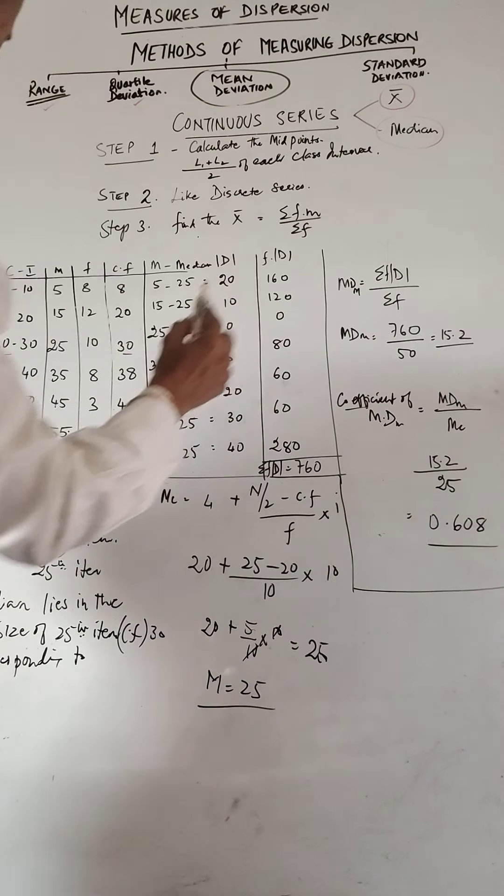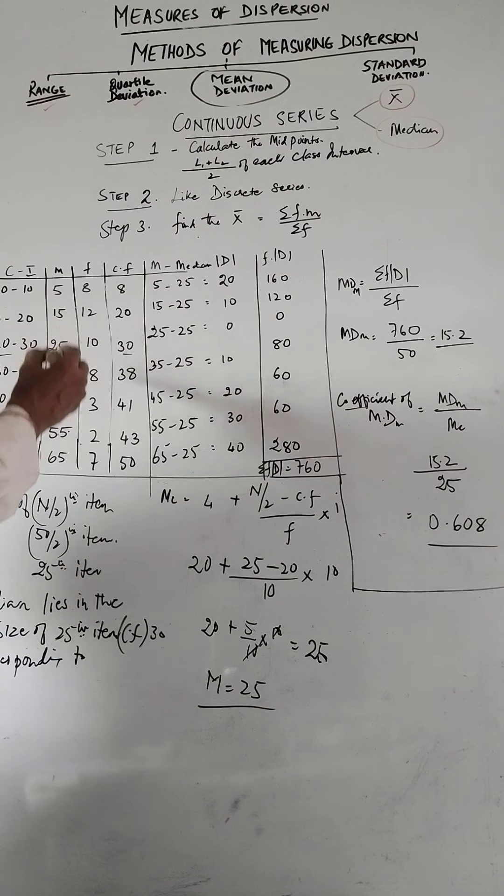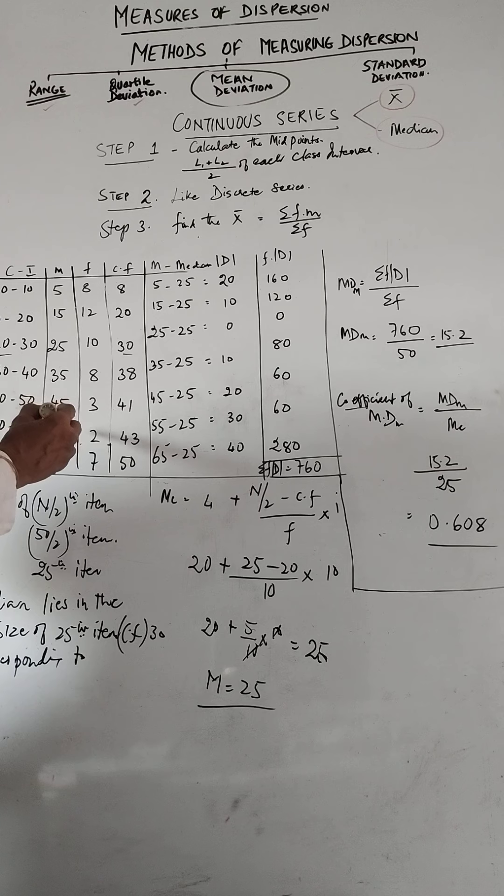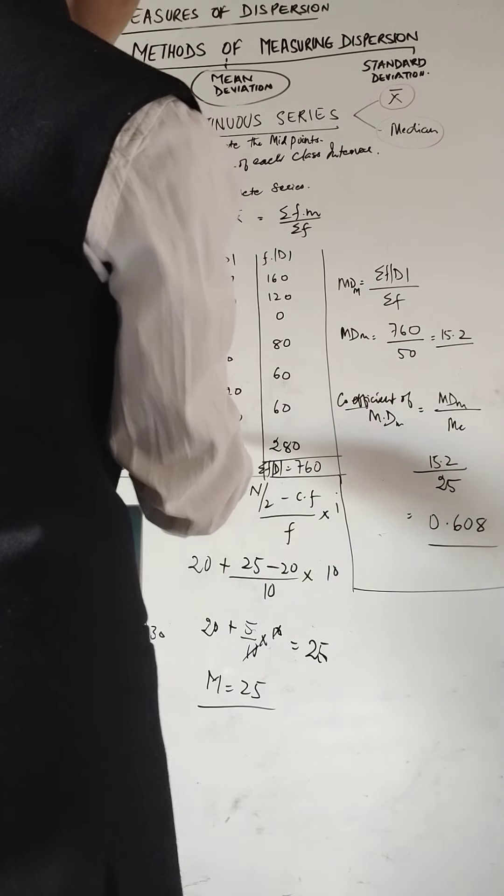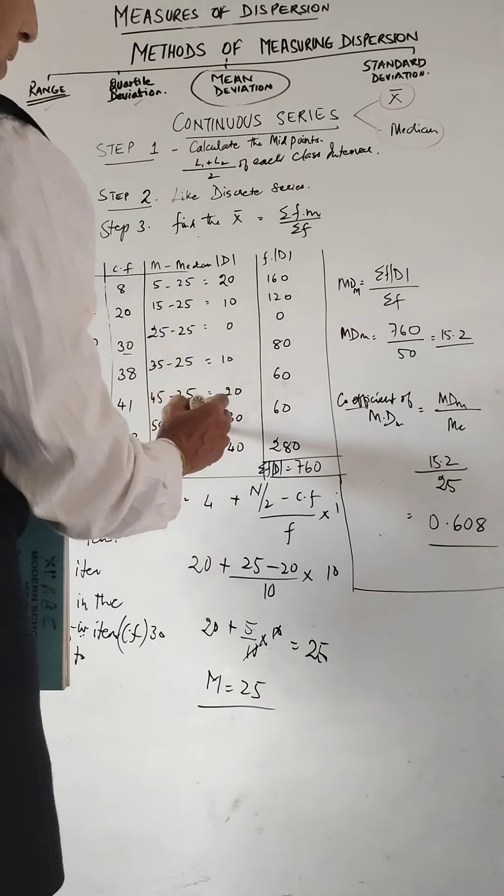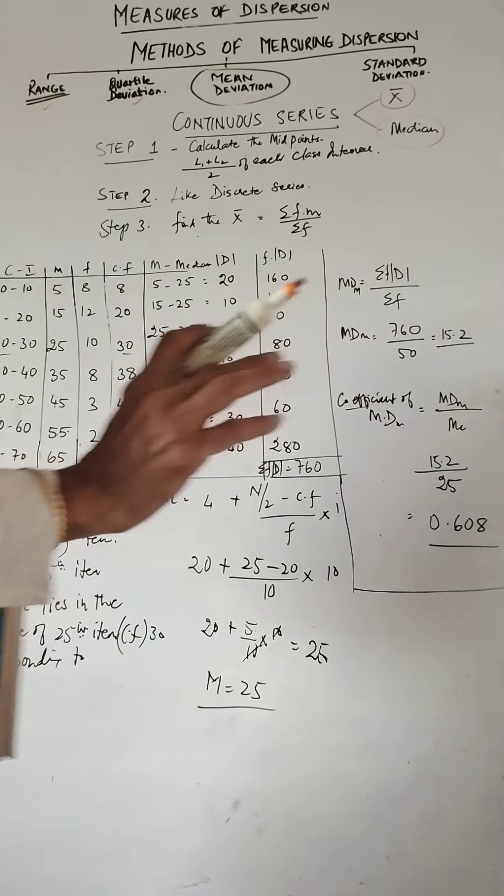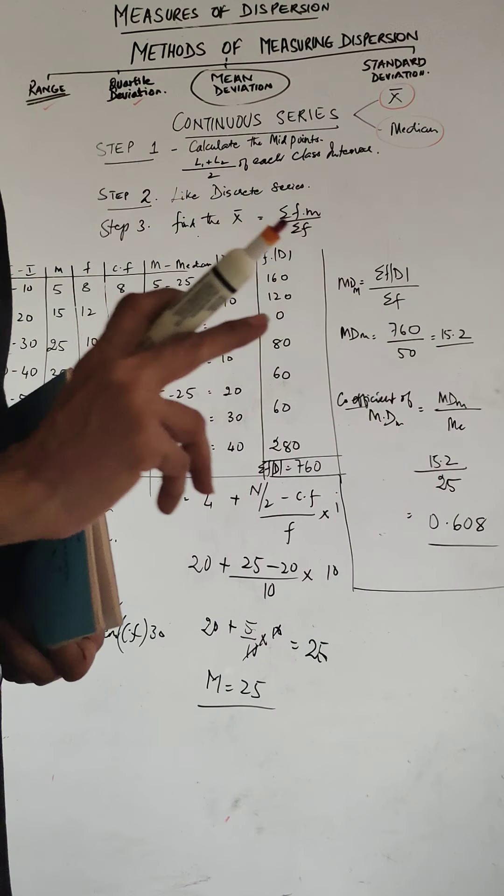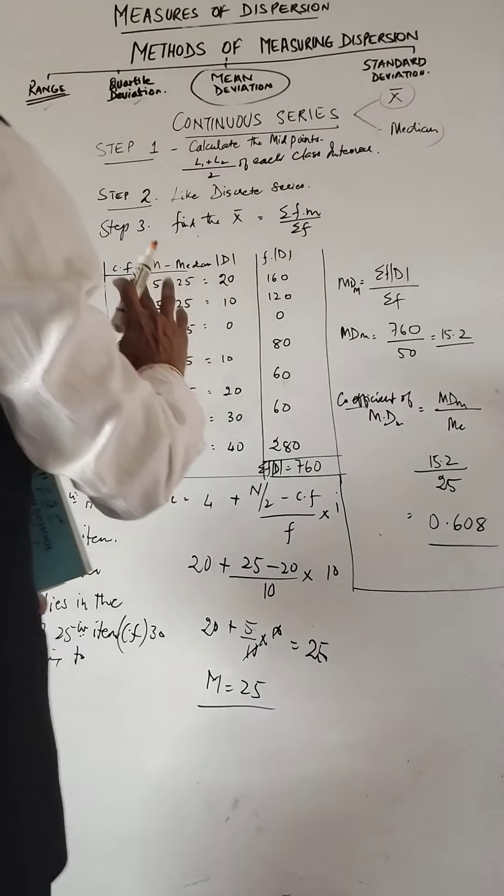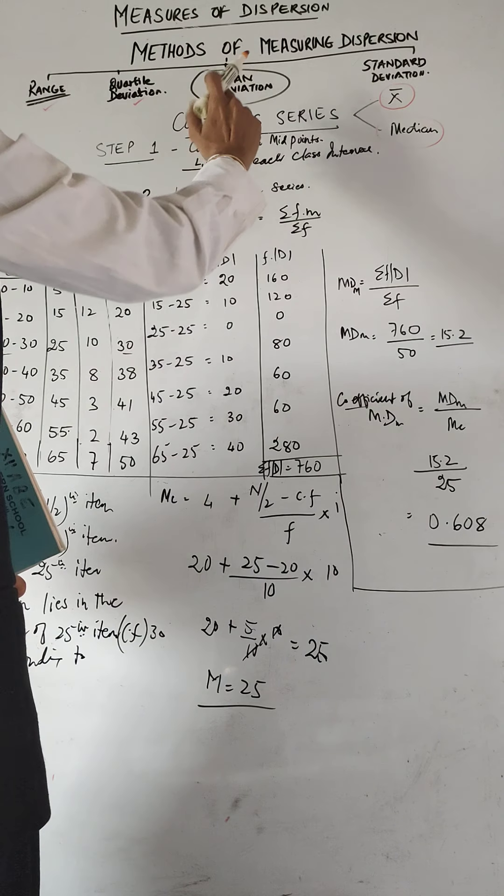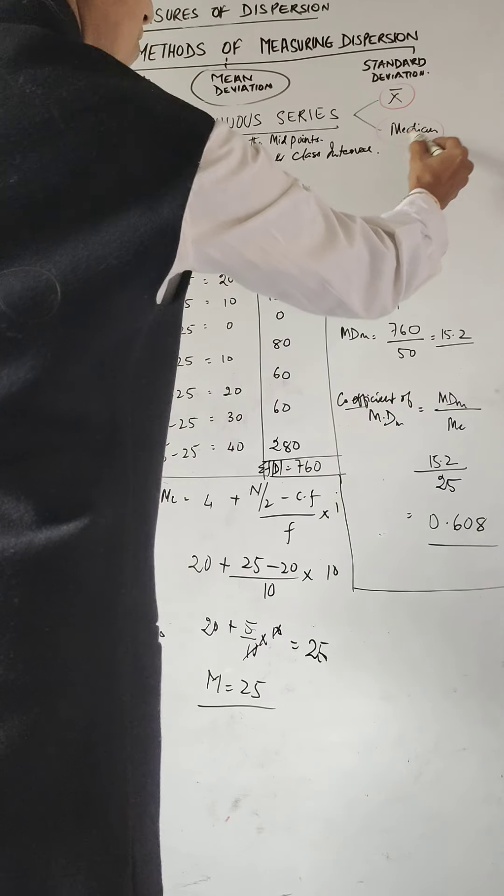I just wanted to tell you that one mistake that I made was for 50 to 60 midpoint I've written 50, so just make that correction. It is 55 and then the mean was 29 and I wrote 50 minus 29. So please that correction has to be done. Now coming back to the lesson we are going to find out mean deviation in the continuous series with the help of this average median.